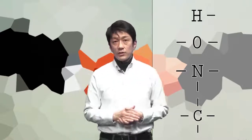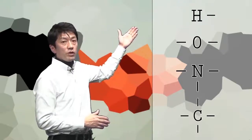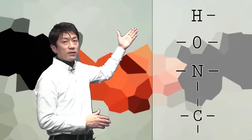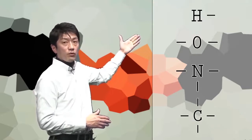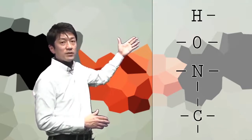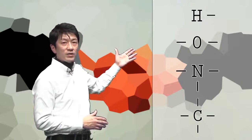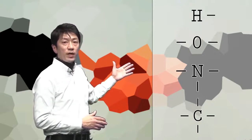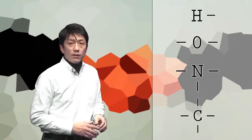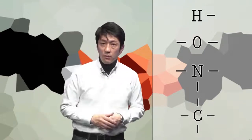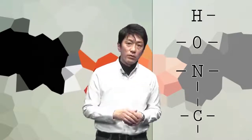In other words, H can bond with only one other element, O can bond with two other elements, N can bond with three other elements, and C can bond with four other elements at the same time. So many different combinations of C, H, O, N are possible.